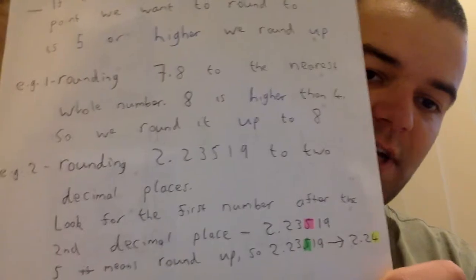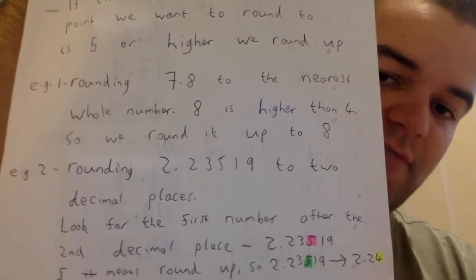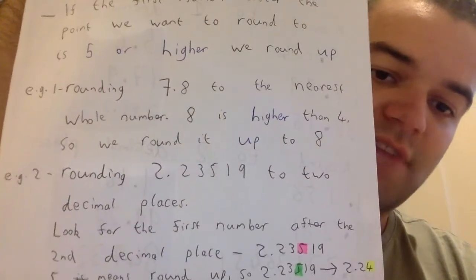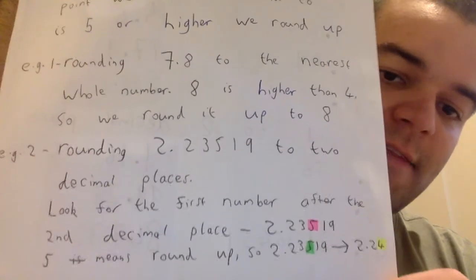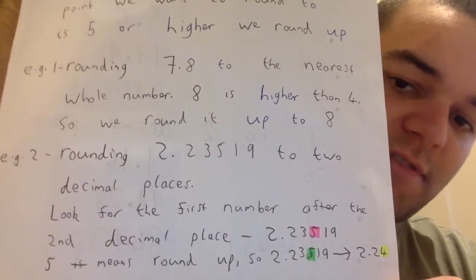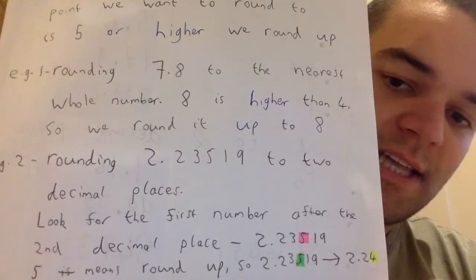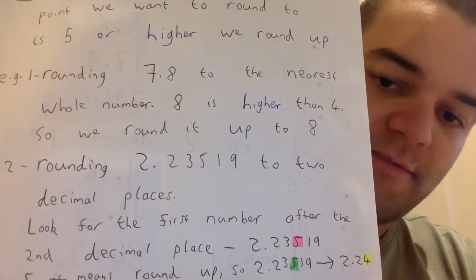For this one, if I had 2.23519 and I wanted to round it to two decimal places, the first thing I should do is look for the first number after the second decimal place, which in this case is 5.